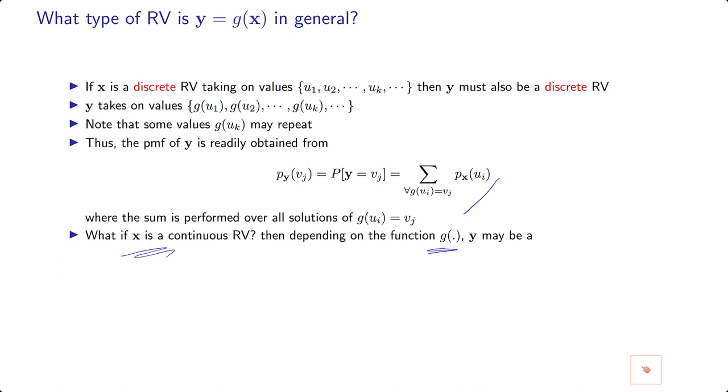For instance, if G is a quantizer, then Y still becomes a discrete type random variable. An analog to digital converter, for example, produces output that takes values from a finite countable number of values. Therefore, the output of an analog to digital converter is discrete type, even though the input can be continuous type.